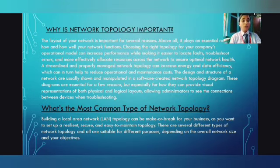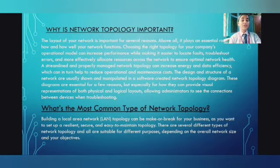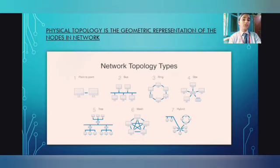What is the most common type of network topology? Building a local area network topology can make or break your business, as you want to set up a resilient, secure and easy-to-maintain topology. There are several different types of network topology, all suitable for different purposes depending on the overall network size and your objectives. Physical topology is the geometric representation of nodes in the network. The types are: point-to-point, bus, ring, star, tree, mesh, and hybrid.